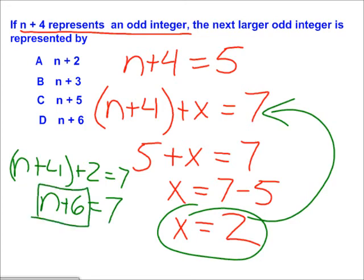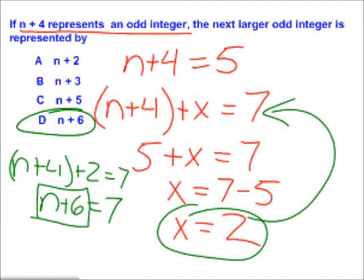This shows that in order to find the next larger odd integer, you must use the expression n+6.